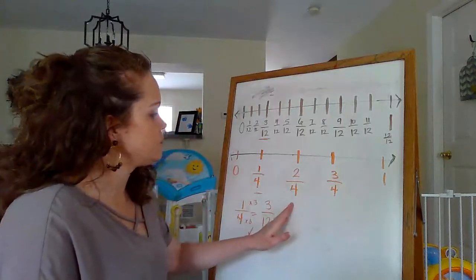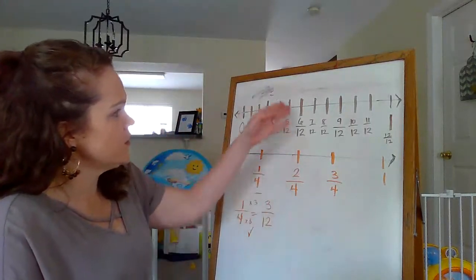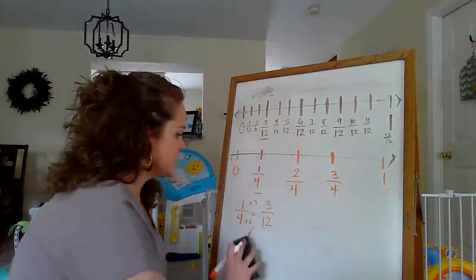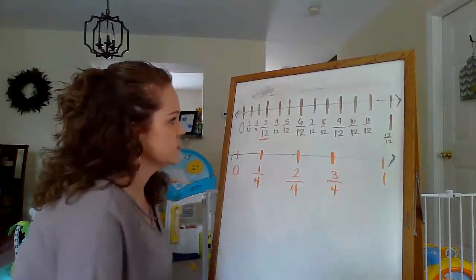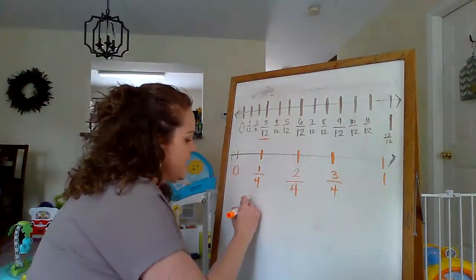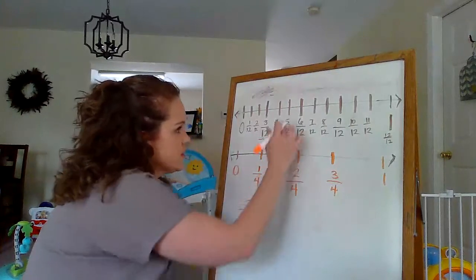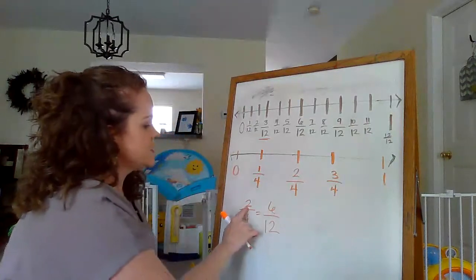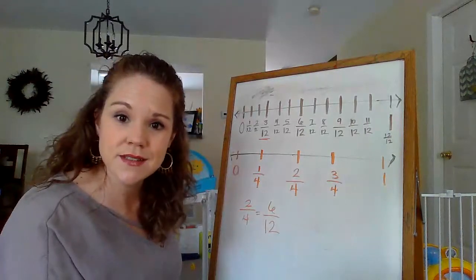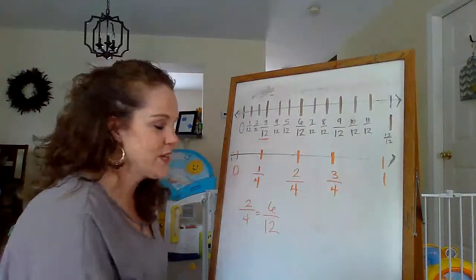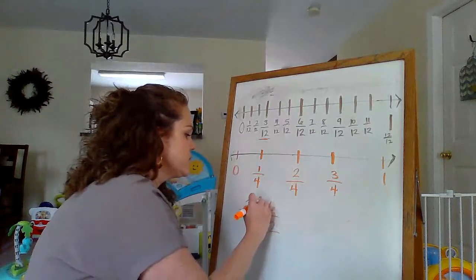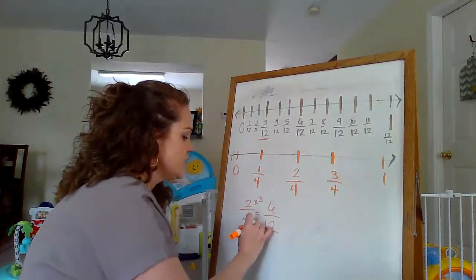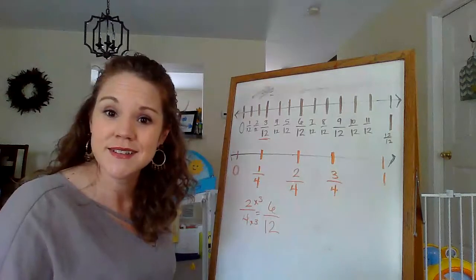All right. So let's try how many fourths are equivalent to 6 twelfths. Well, let's take a look. Okay. So we're going to say 2 fourths and 6 twelfths. They seem to line up, but let's see if this works. Is 2 times anything 6? Yes, we know it's 3. 2 times 3 is 6. Is 4 times 3, 12? Yes, it works.